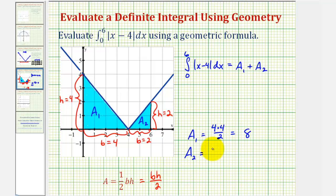And area sub two is equal to two times two divided by two. Four divided by two is two. So the definite integral is equal to eight plus two, which is equal to ten.